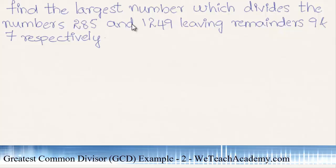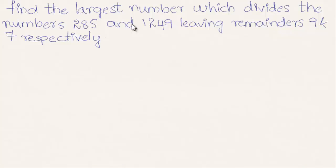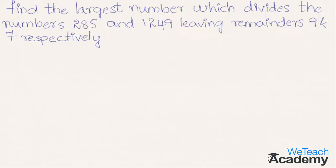Hey guys, welcome to vteachacademy.com. In this presentation we are going to discuss an example on greatest common divisor. The given example is to find the largest number which divides the numbers 285 and 1249 leaving remainders 9 and 7 respectively. So we need remainders as 9 and 7.